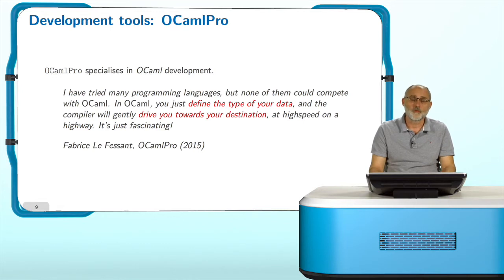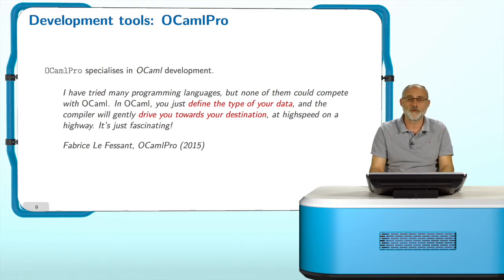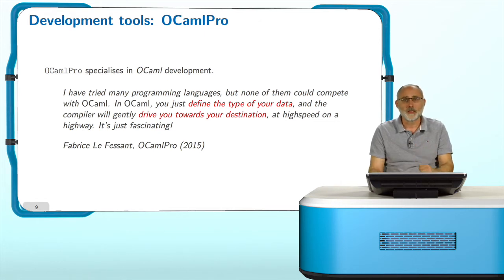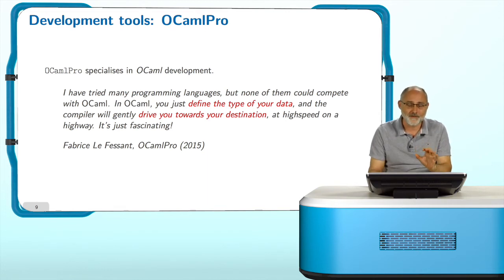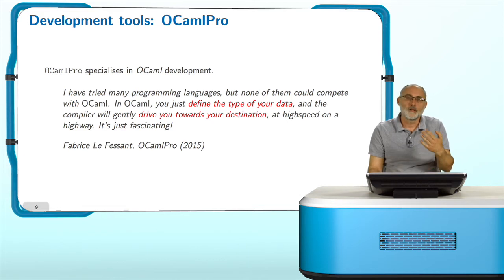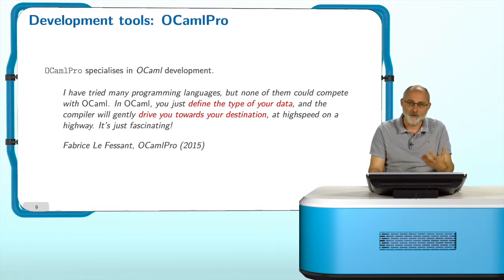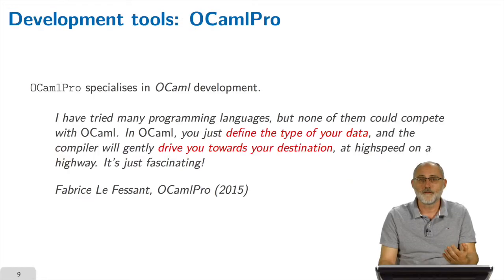Then you have OCaml Pro, a professional company that specializes exactly in OCaml development — the best you can find if you need OCaml development done. Again, they point out that what is fascinating compared to other languages is that in OCaml, often you just define the type of your data, and then naturally and gently the compiler will drive you towards the development of the right program, very fast. For them, this is really fascinating.